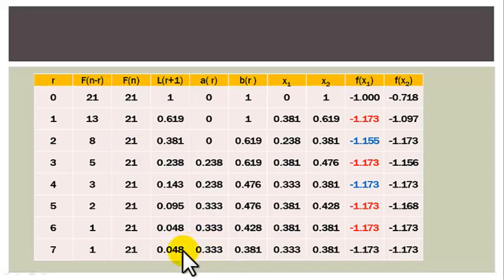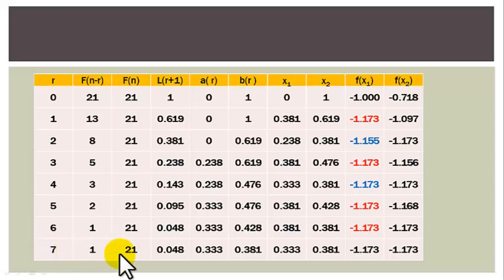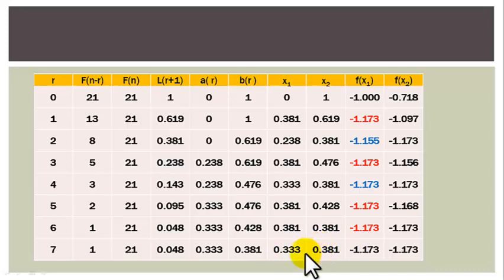We continue this way until the length of the interval of uncertainty is less than or equal to 0.05. At R equals to 6 the length of the interval of uncertainty is 0.048, and the value of X1 at this point is 0.381 and X2 is 0.381. Moving to the next iteration R equals to 7, the length of the interval of uncertainty is still 0.048, and X1 is 0.333 while X2 is 0.381. At this point we can stop; finding the average of these two gives us the optimum solution.